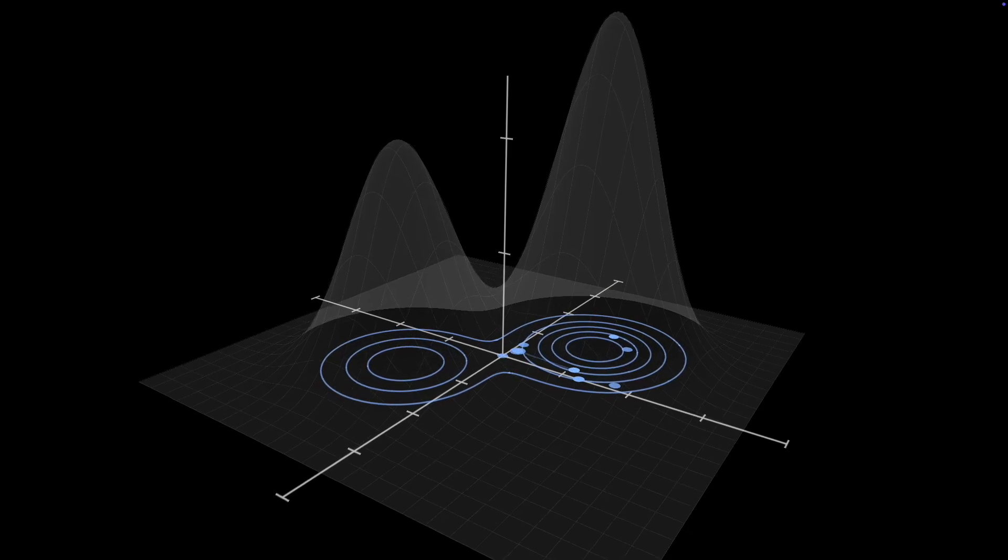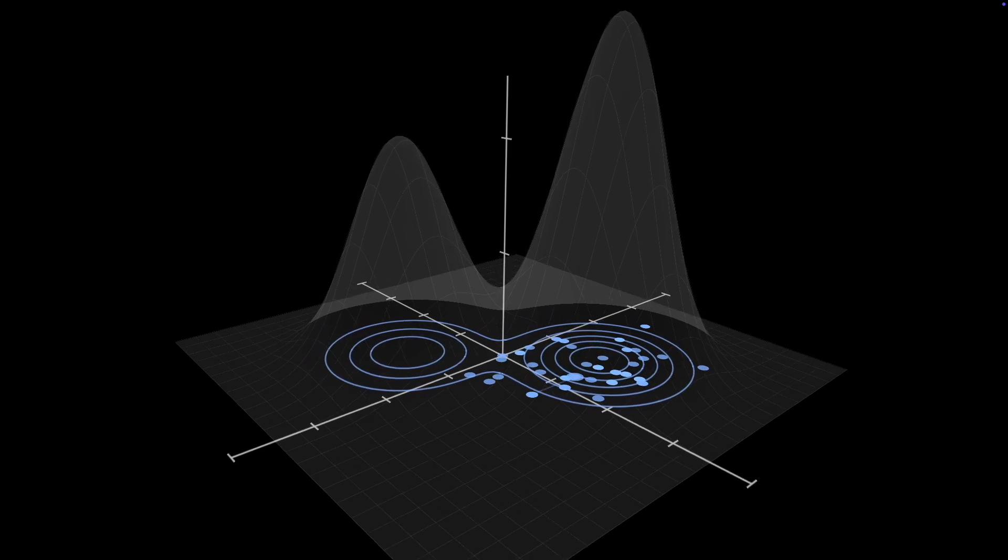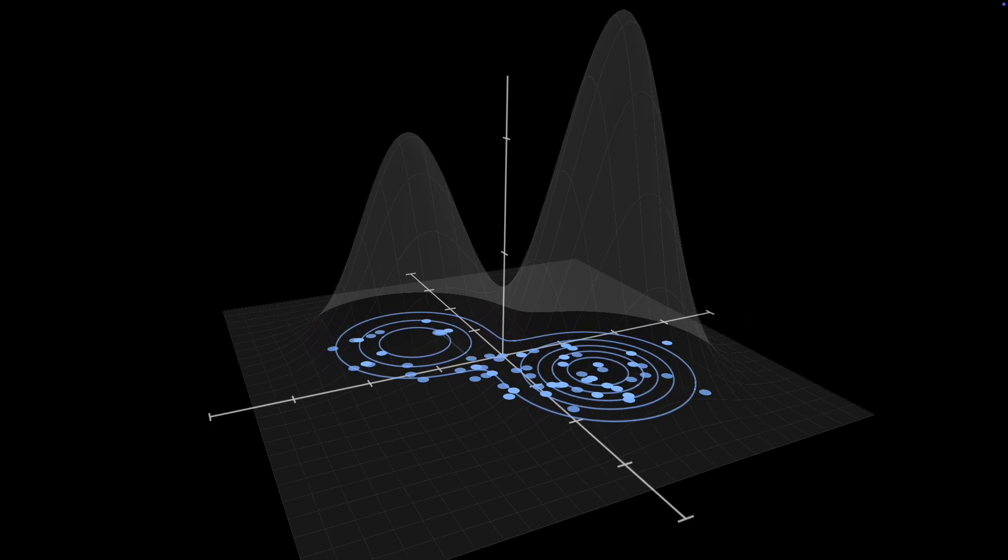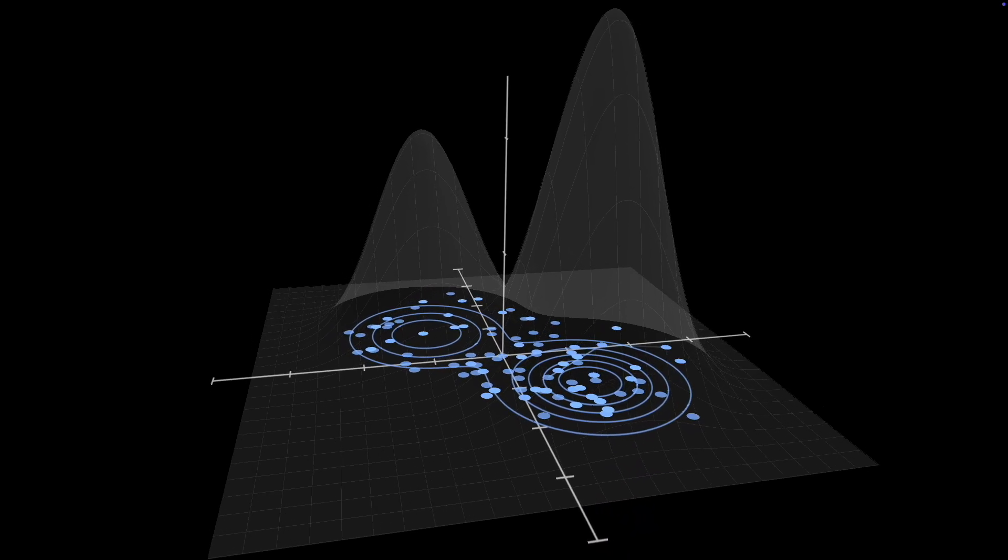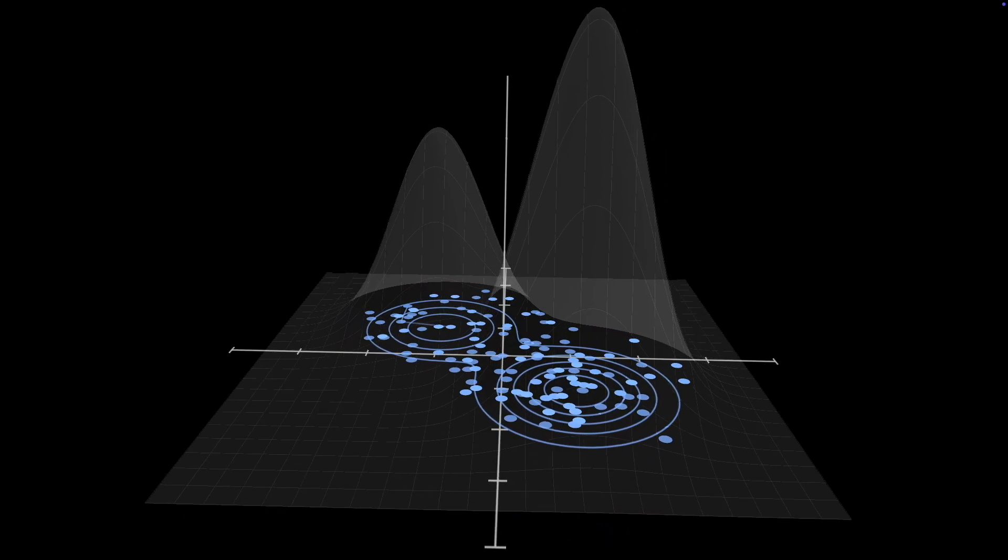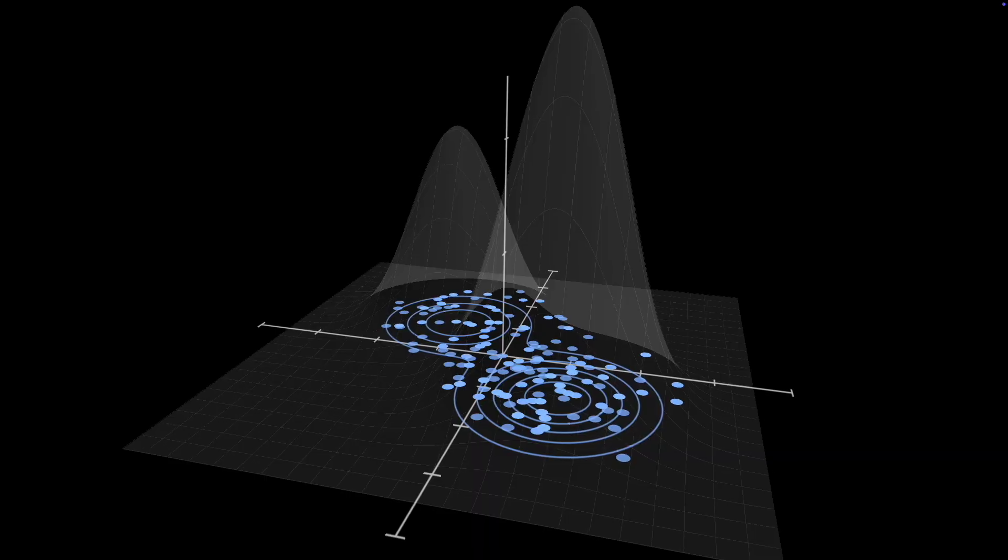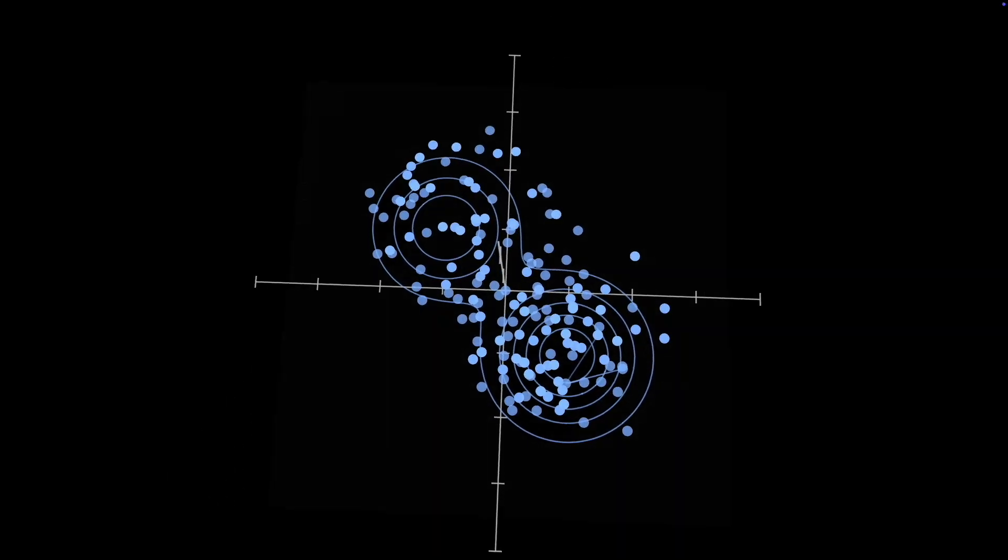It turns out that these tricks are particularly useful when we want to draw samples from complex, high-dimensional probability distributions. In fact, MCMC really starts to shine as we scale our Markov chains beyond just a single dimension.